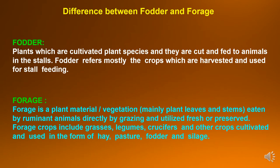Now to understand the difference between fodder and forage: Fodder refers to the plants which are cultivated plant species and they are cut and fed to animals in the stalls. Fodder refers mostly to the crops which are harvested and used for stall feeding. While in the case of forage, forage is a plant material or vegetation mainly plant leaves and stems eaten by ruminant animals directly by grazing and utilized fresh or preserved. Forage crops include grasses, legumes, crucifers and other crops cultivated and used in form of hay, pasture, fodder and silage.